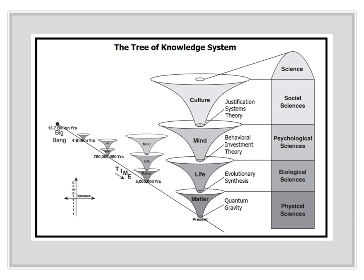The Tree of Knowledge is a new theory of cosmic evolution that stretches from the Big Bang to the present. As shown, it depicts the evolution of complexity in four phases or dimensions.